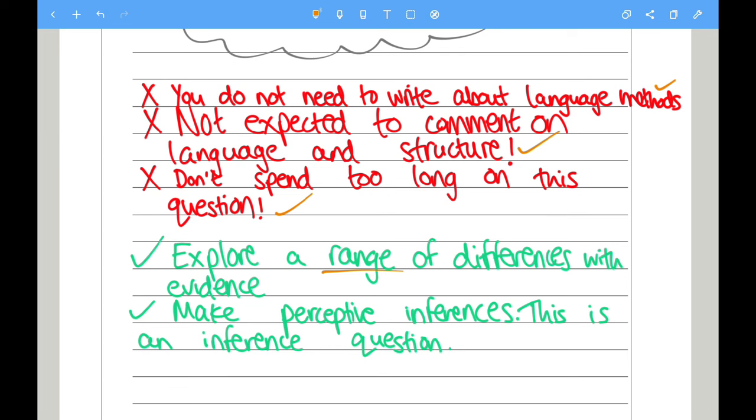Make perceptive inferences. This is an inference question. It's very important. It's looking at how you infer the text. What you understand. What conclusion you come to from reading the text, Source A and Source B.